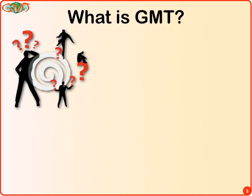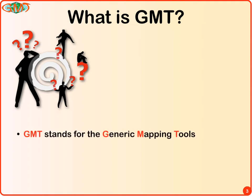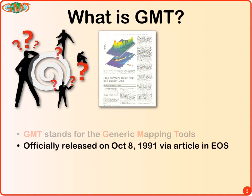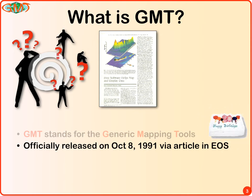Before we get too far, let's talk about what GMT is. It stands for the Generic Mapping Tools, although very early on it stood for Gravity Magnetics Topography, because that's what we were doing for our thesis. We then realized that if you plot X versus Y, it doesn't have to be gravity versus distance — it could be other things. GMT was officially released on October 8th, 1991, which means tomorrow is the 20th anniversary. We were one day early — we couldn't really do this on a Saturday.